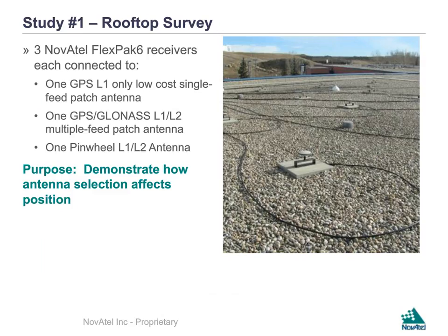In our first study, we looked at a simple rooftop survey without any corrections. We applied three Novotel FlexPak 6 receivers connected to three different antennas: a simple GPS L1-only low-cost single-feed patch, a GPS/GLONASS L1-L2 multi-feed patch antenna, and a Novotel pinwheel L1-L2-L5 antenna. The purpose is to demonstrate how antenna selection affects the position solution.